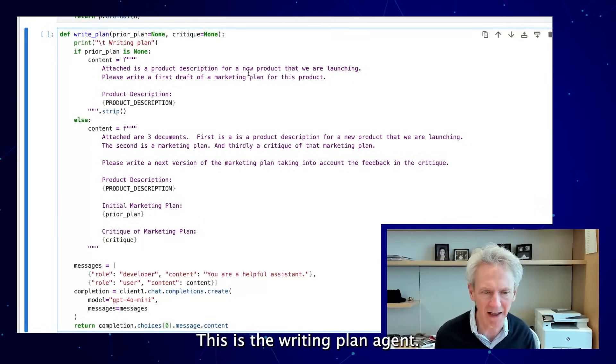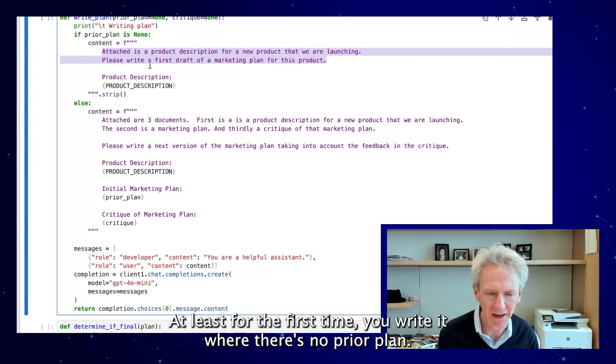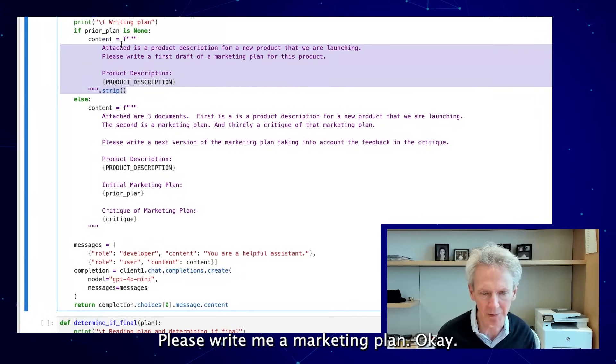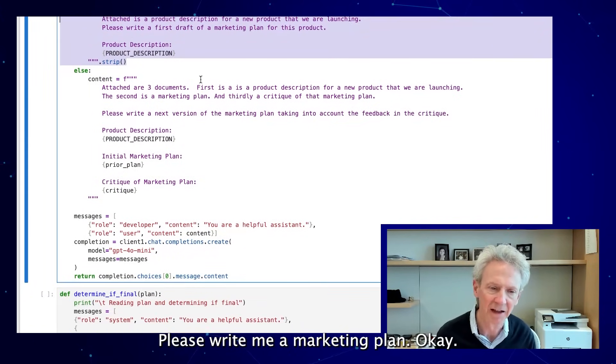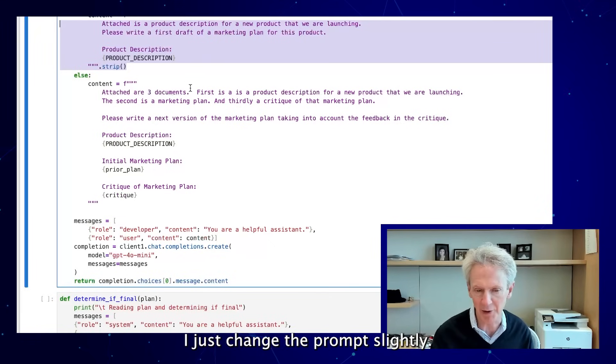There are three agents. This is the writing plan agent. You can see the prompt here attaches a new product description, at least for the first time you write it, where there's no prior plan. Here's the product description, please write me a marketing plan.